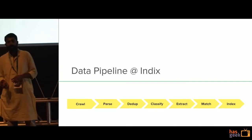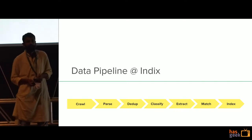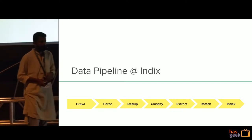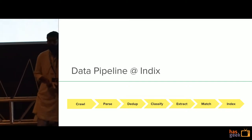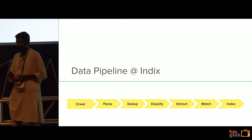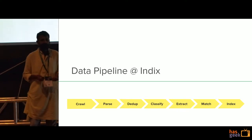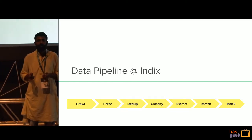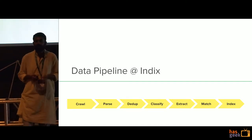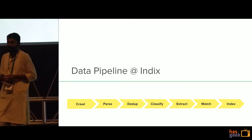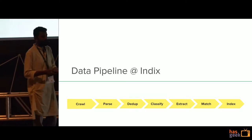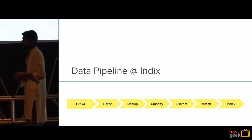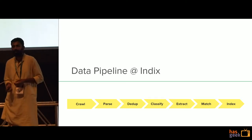I'm going to briefly talk about what the pipeline looks like for us, because I need to set this context so that we get into why we built Switch. The pipeline at a high level: we crawl HTML pages from the web and then we have a series of algorithms which involve processing this unstructured HTML content through the pipeline, where we stamp each product with a category, identify the brand using some machine learning techniques, and then go deeper into the product to understand its attributes and so on.